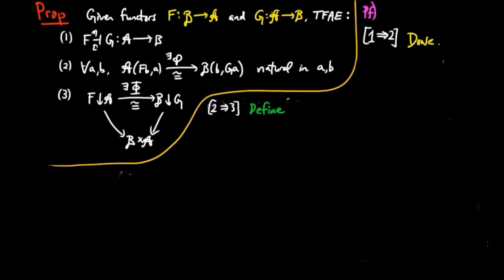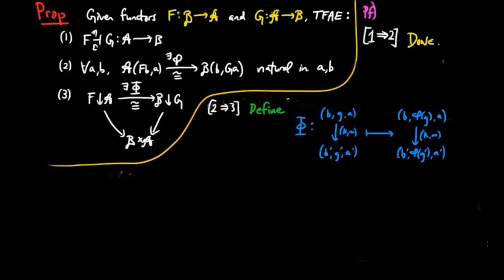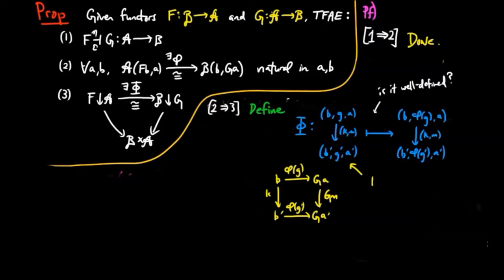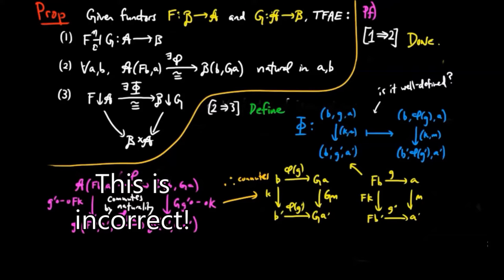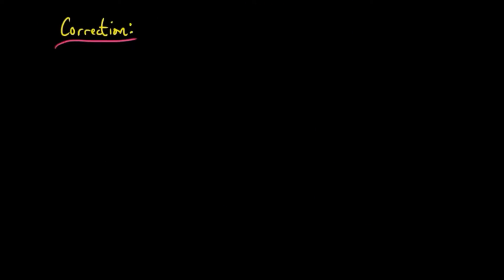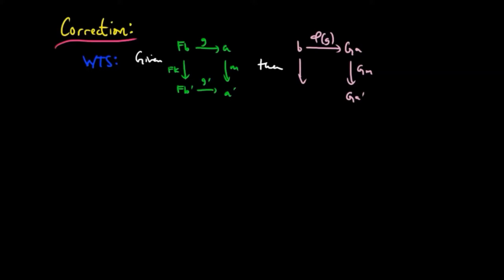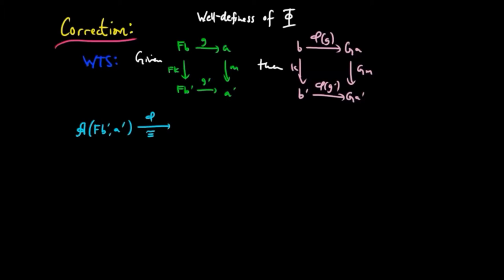Next, let's prove 2 implies 3. We define big Phi by taking an object (B, G, A) to (B, little phi(G), A), and a morphism (K, M) to (K, M). Note that Phi respects the forgetful functors by this definition. Preservation of composition and identity is clear, but we need to verify that if (K, M) is a morphism in F over A from G to G', then (K, M) is a morphism from little phi(G) to little phi(G') in B over G. I made a mistake here so we need to proceed with a correction.